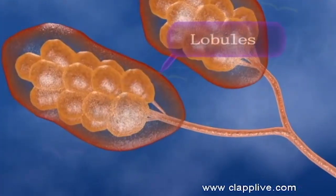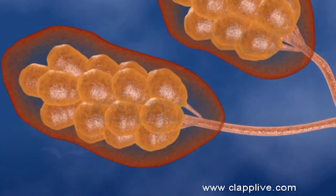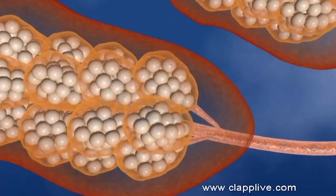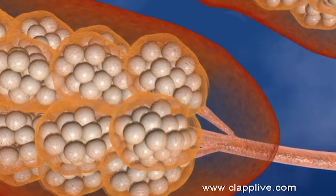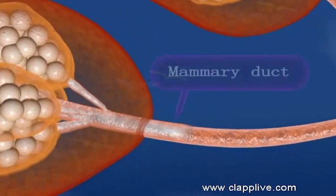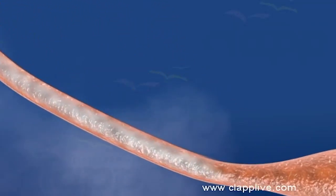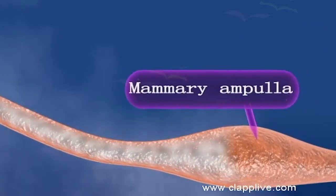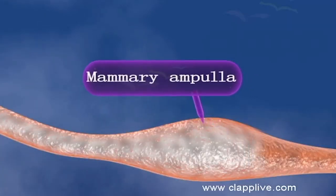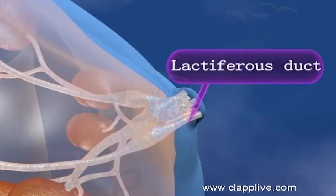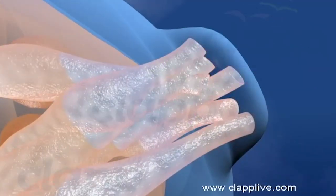Each lobe is made up of a number of lobules. Each lobule is composed of grape-like clusters of milk-secreting glands termed alveoli. When a baby sucks the nipple, milk is produced in the alveoli. Milk passes from the alveoli into the mammary tubules and then into the mammary duct. Several mammary ducts join to form a wider part, the mammary ampulla, or lactiferous sinuses, where milk may be stored before going to the lactiferous ducts. Each lactiferous duct carries milk to the nipple. The ejection of milk is stimulated by the hormone oxytocin. A nursing woman can secrete 1 to 2 litres of milk per day.